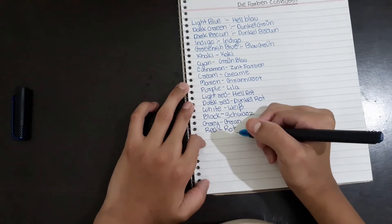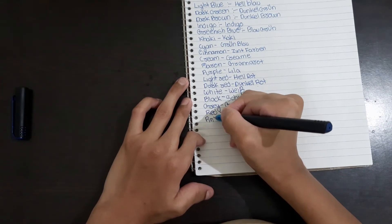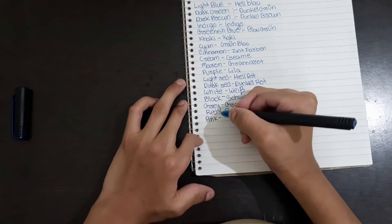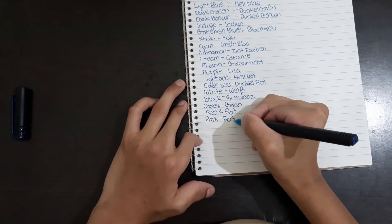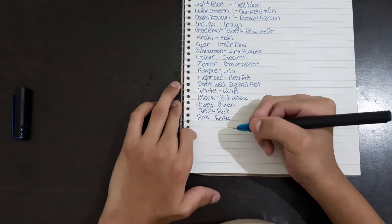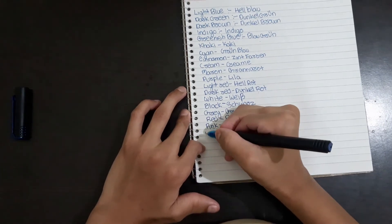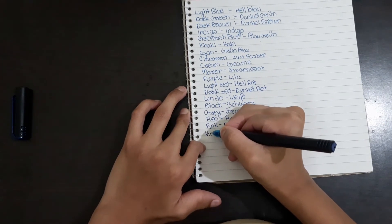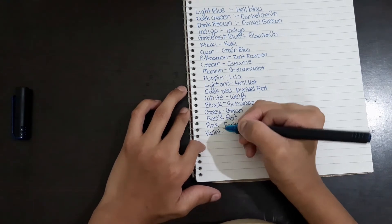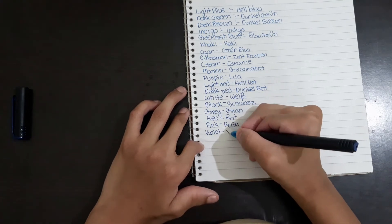Pink is Rosa. Violet, we can write it as Violett.